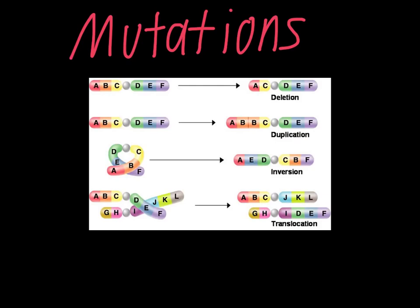The next example is an inversion. I like this picture because it kind of gives you an idea of what could possibly happen to the chromosome to cause this. Instead of going through our normal progression, you can see that the C, B, E, and D were switched. This is when the chromosome kind of gets folded over itself, and some of the DNA then gets moved to a new part of the chromosome.